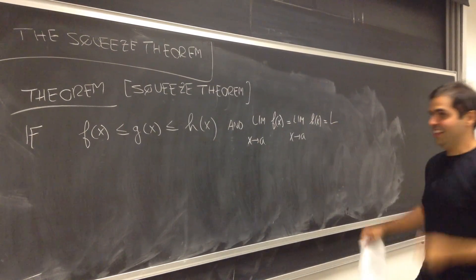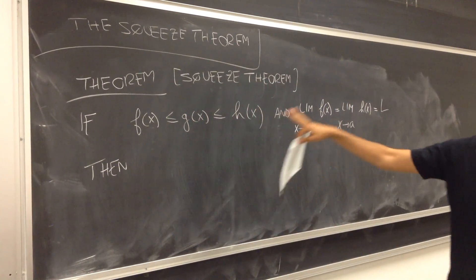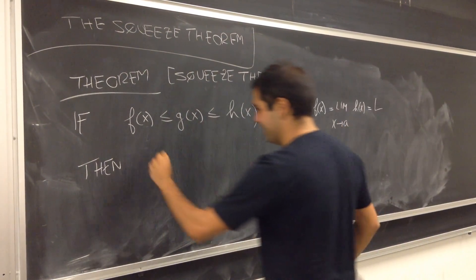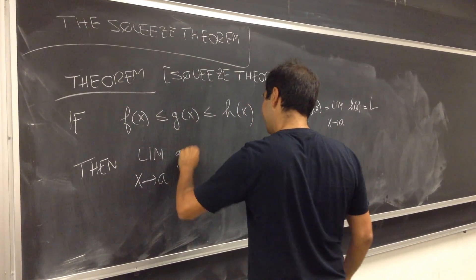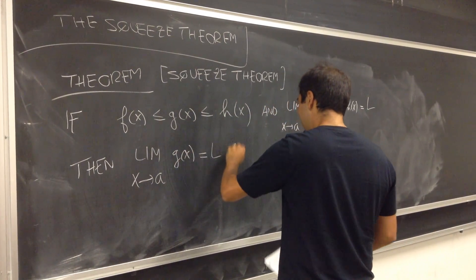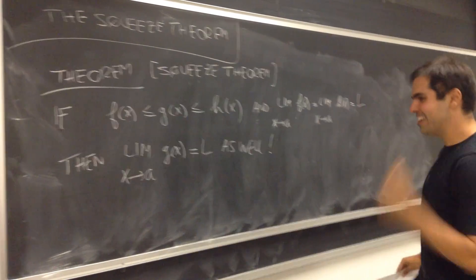let's call this l, then, in fact, you can deduce that g has to have the same limit as well. x from a, g of x equals to l as well. Hey, that rhymes! Poetry time.